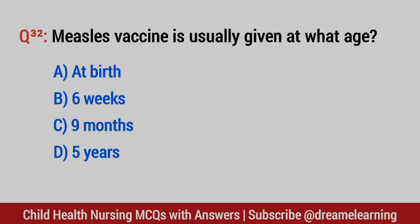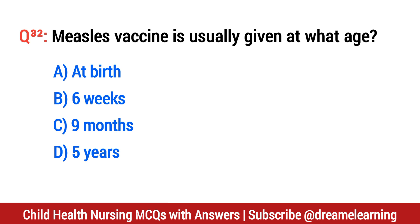Question number 32. Measles vaccine is usually given at what age? The right option is C: nine months.